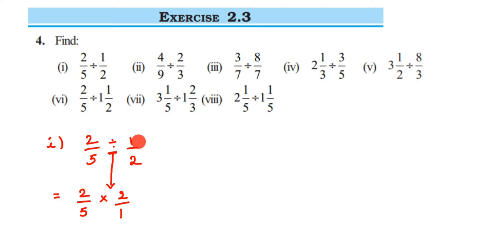There's no number that can be cancelled here, so I'm going to multiply: 2 twos are 4, and the denominator 5 ones are 5. So the first answer is 4 by 5. Then the second question: we have 4 by 9 divided by 2 by 3.